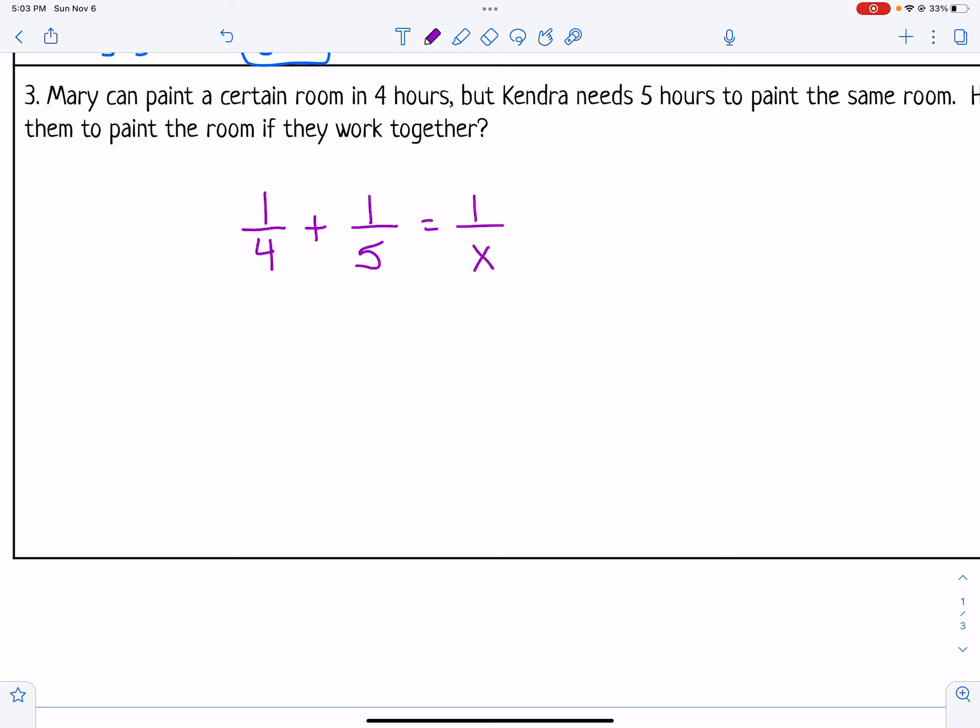You can do a couple things here. You can either go ahead and combine these two fractions with a common denominator and then cross multiply. Or you can get a like denominator for everything and cancel it out. So what I'm going to do is get a common denominator just for this side. So I'm going to multiply 1 fourth by 5 and 1 fifth by 4. So I get 5 over 20 plus 4 over 20 equals 1 over x.